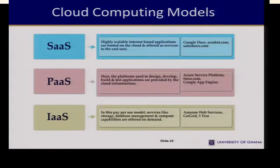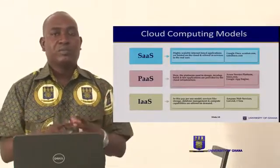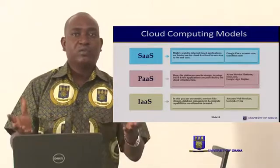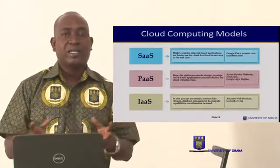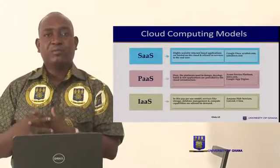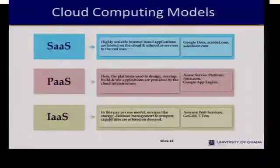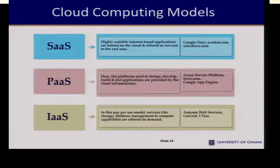With platform as a service, the platform is given to an individual or corporate institution either to host programs or any other activity on the platform, and is still managed by a third party. The infrastructure as a service is the third model, where the infrastructure is made available to an individual or corporate institution for a fee, where the institution can utilize the infrastructure for its benefits.